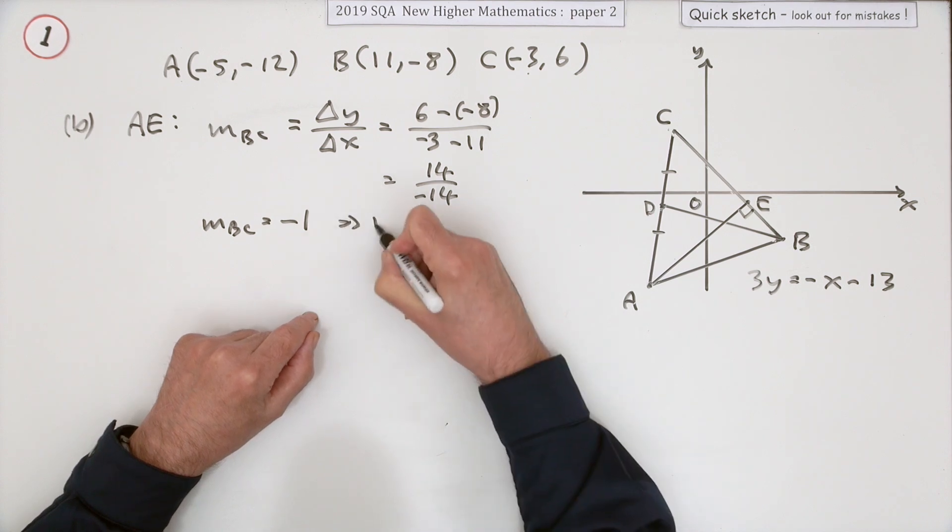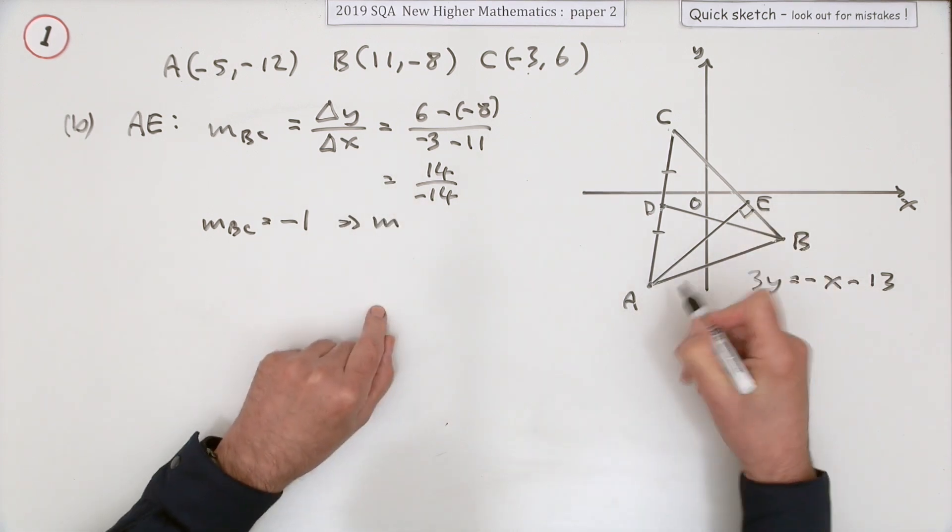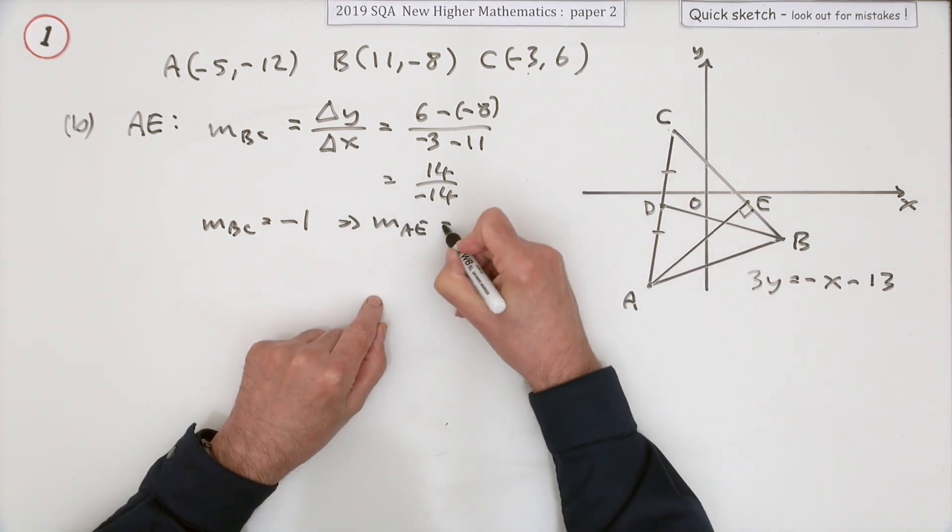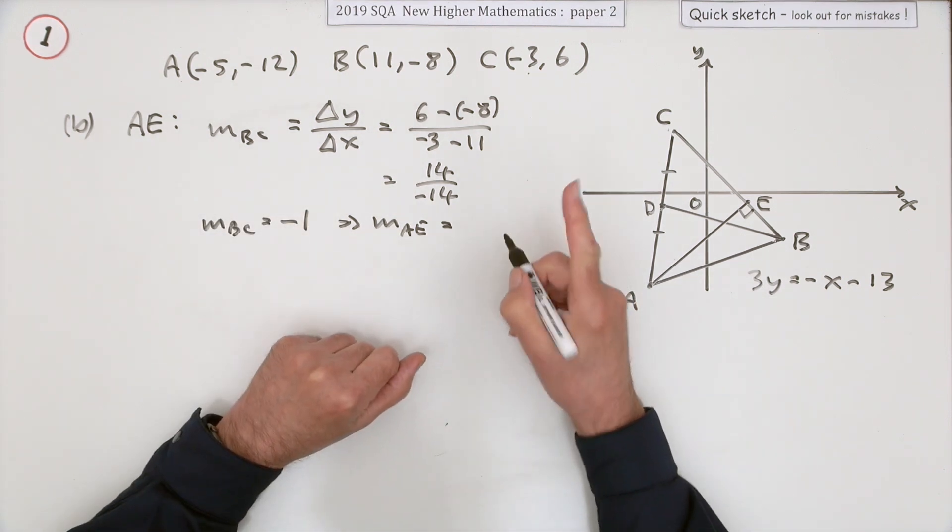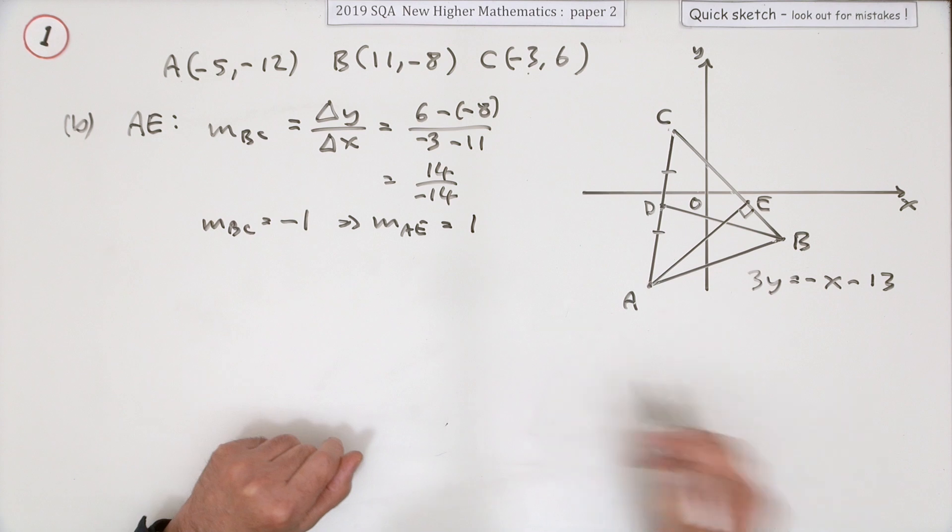So that means the gradient of BC is equal to -1. That looks about right from the diagram, which immediately means that the gradient of your altitude AE will be the negative of the reciprocal. They need to multiply to give -1, making that a 1.